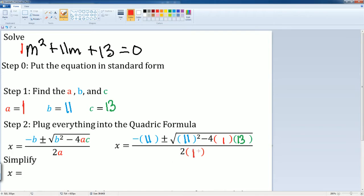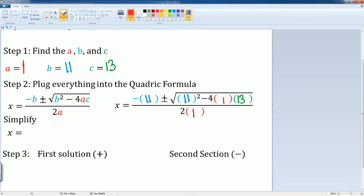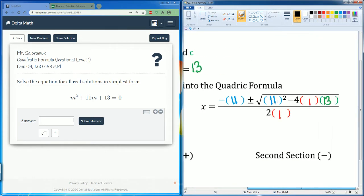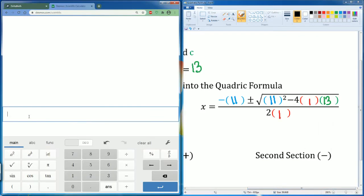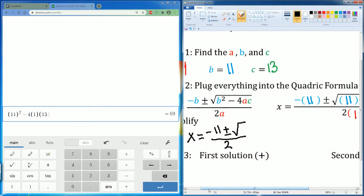Now I can simplify. I see that x is going to be equal to negative 11 plus and minus some radical divided by 2 times 1, which is just 2. I just have to figure out what's in the radical. This is when I use Desmos. So here I go to Desmos scientific calculator and type that in. So I need to know what 11 squared is minus 4 times 1 times 13. I saw that is equal to 69.